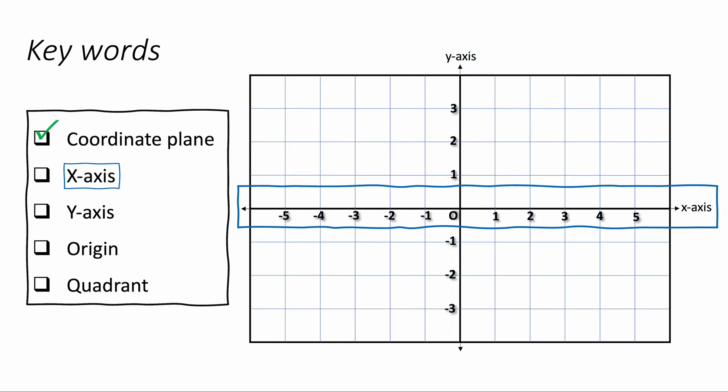The x-axis is the horizontal axis. Horizontal means going across like the horizon. So the x-axis is the axis going across and it's just a bunch of numbers, positive and negative, going left and right.